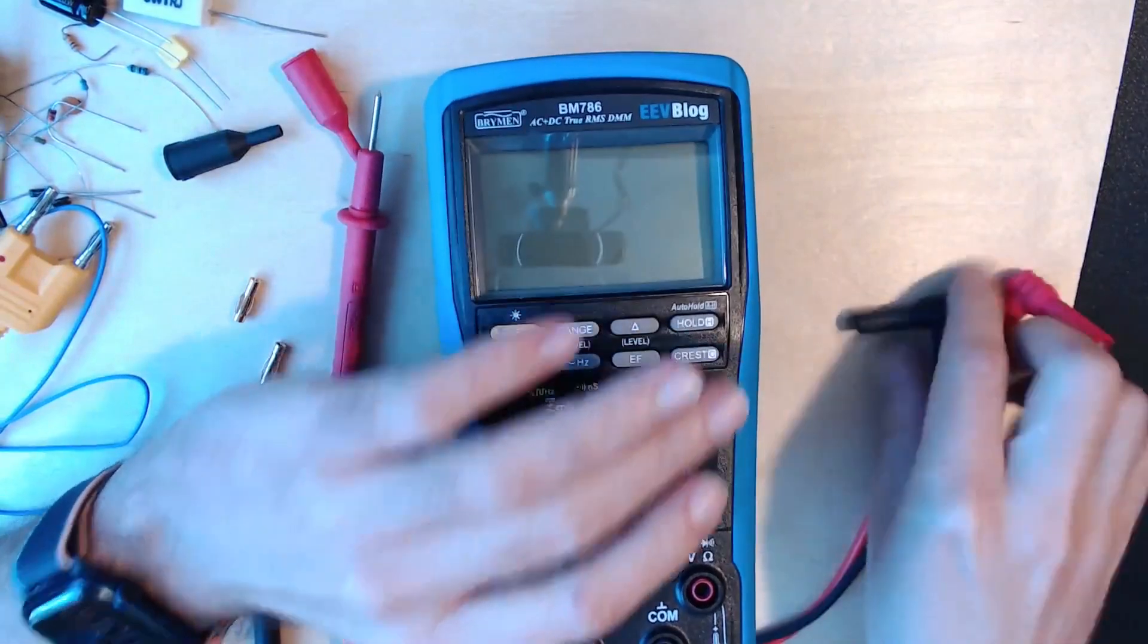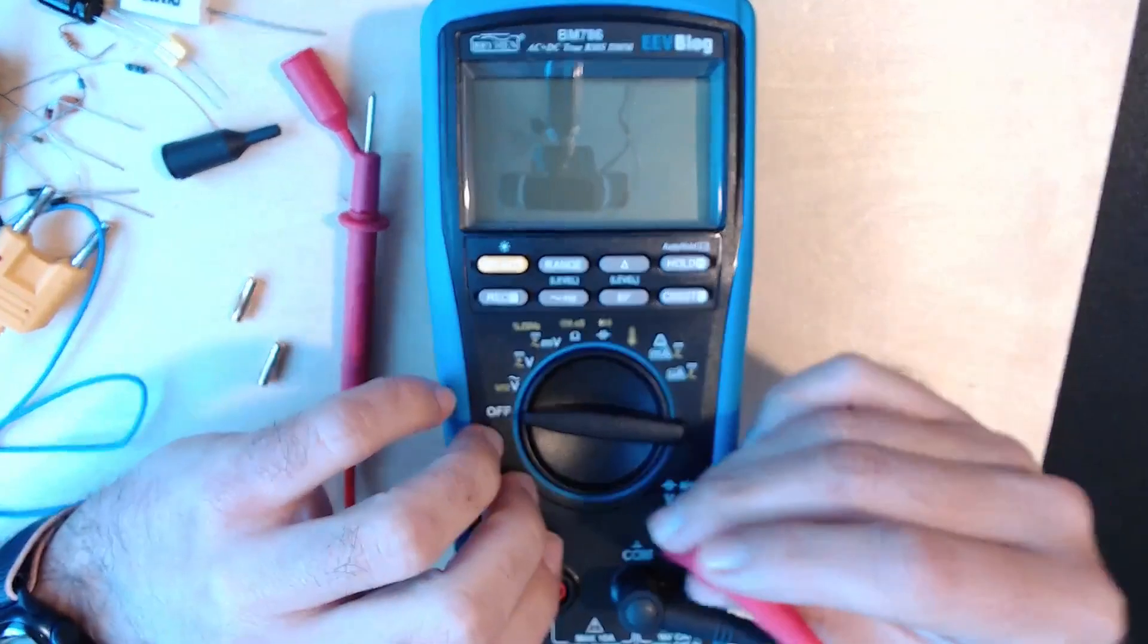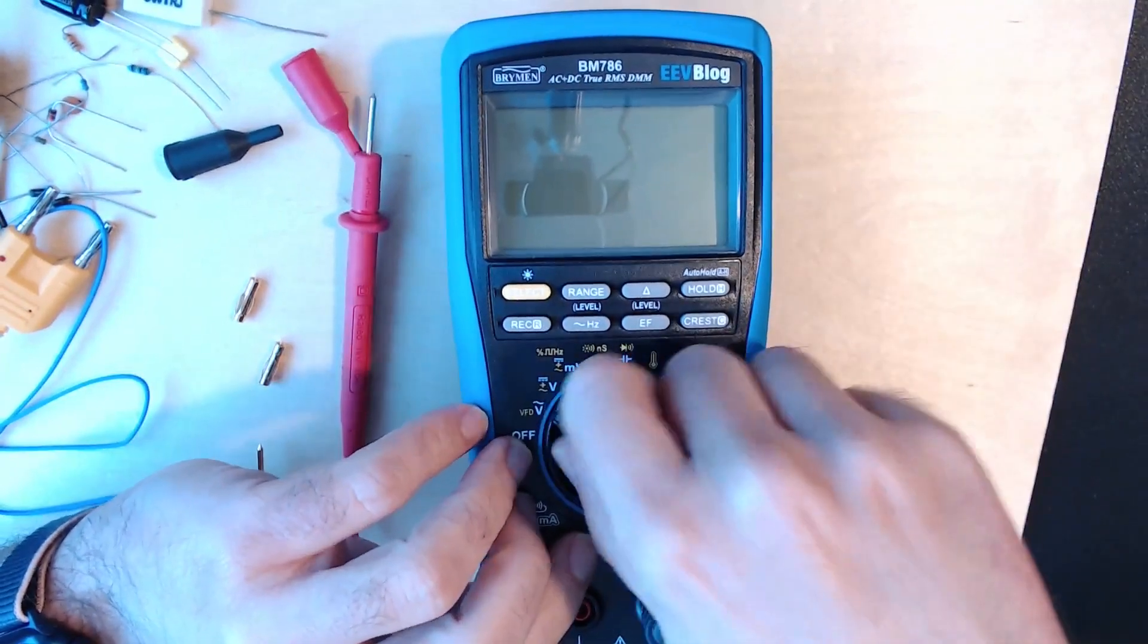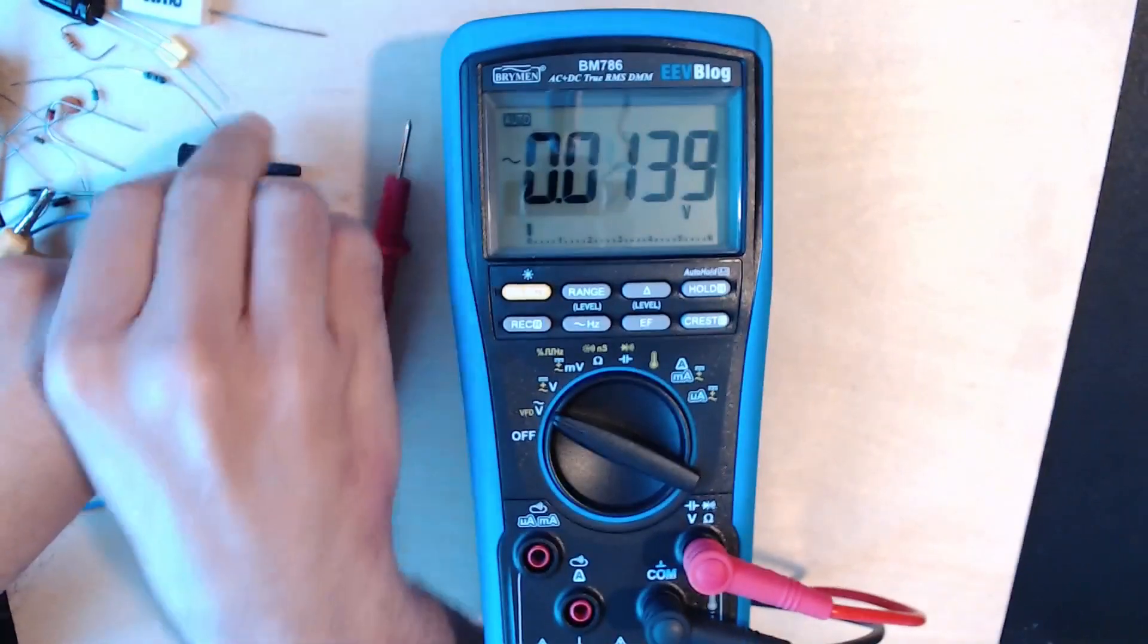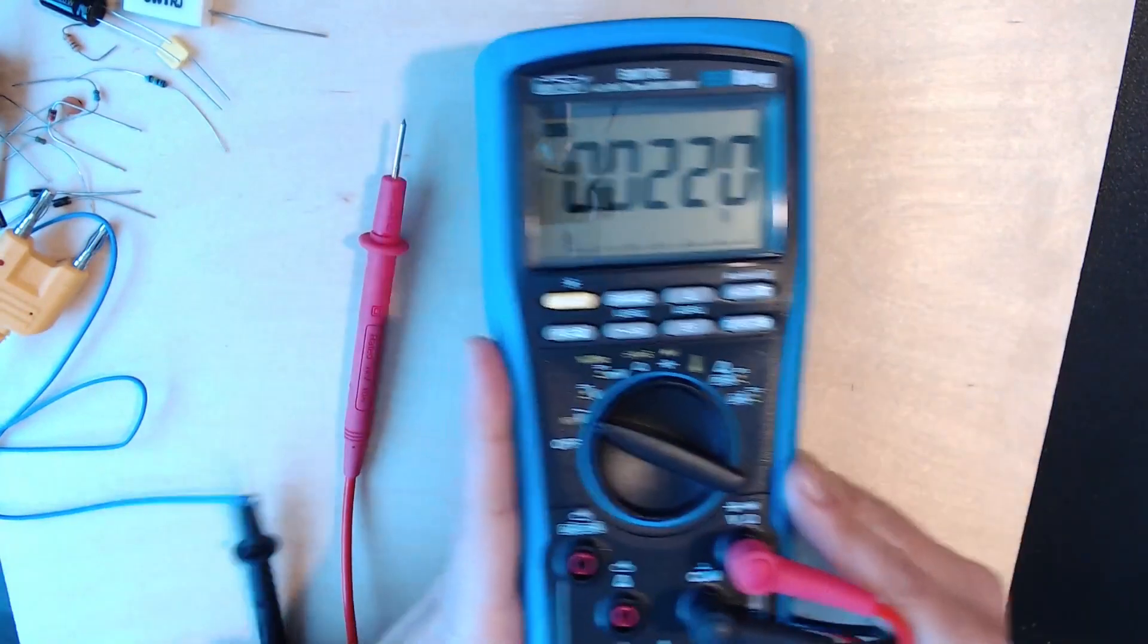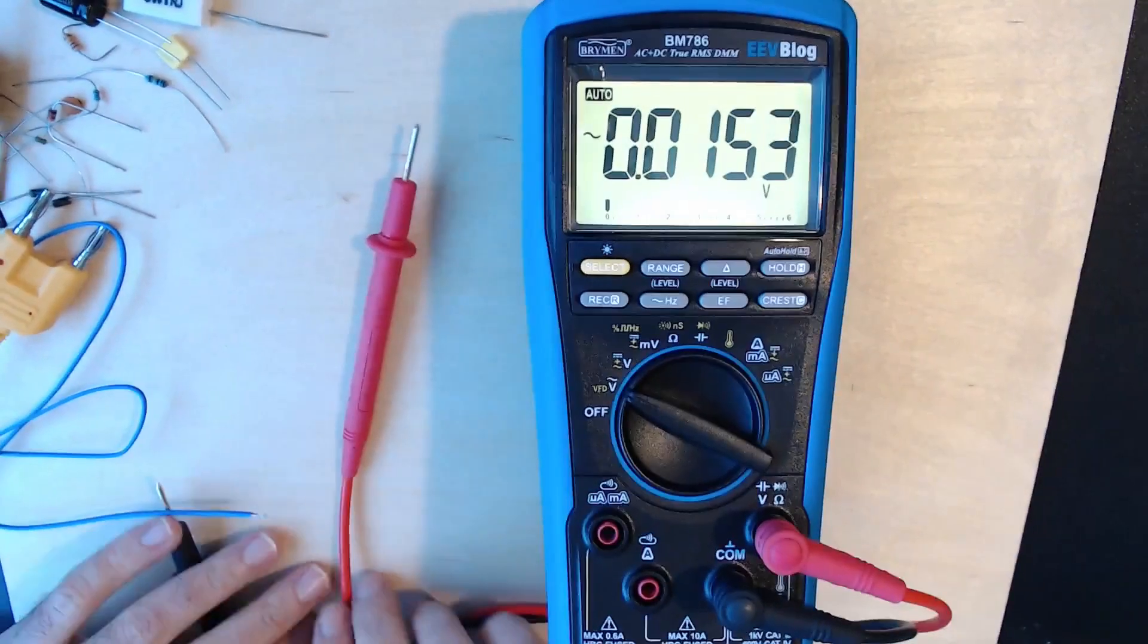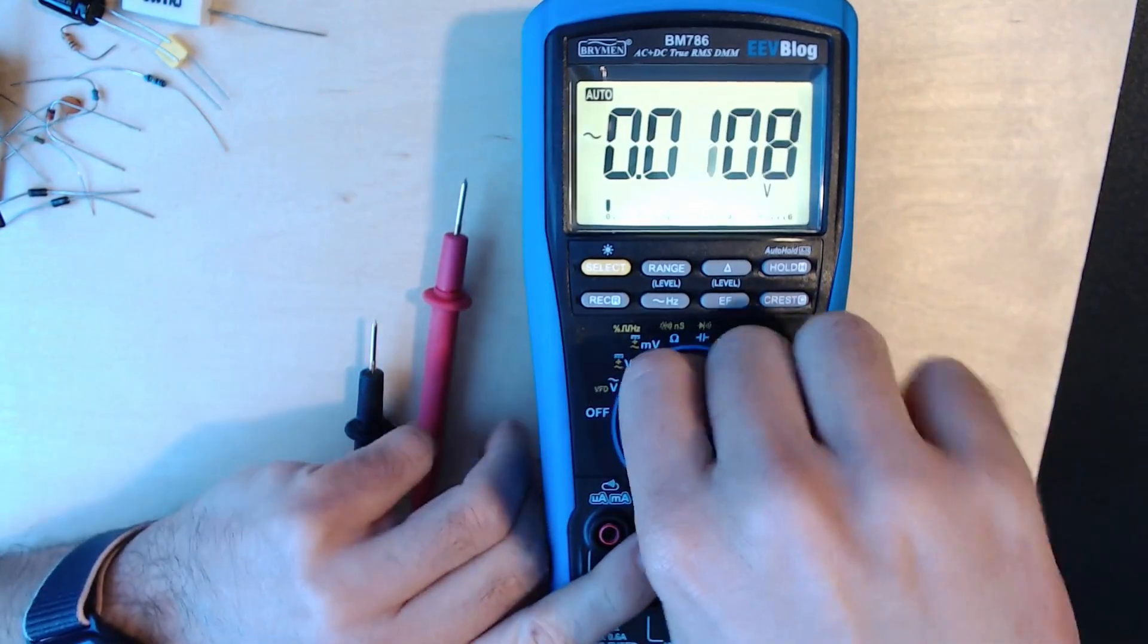Nothing feels cheap on this one. We have four terminals here for the current measurements, the common terminal, and for the other measurements. Let me turn it on. I have some test components over here. Let's turn on the screen light. It's quite nice, there's a bit of glare on the camera.